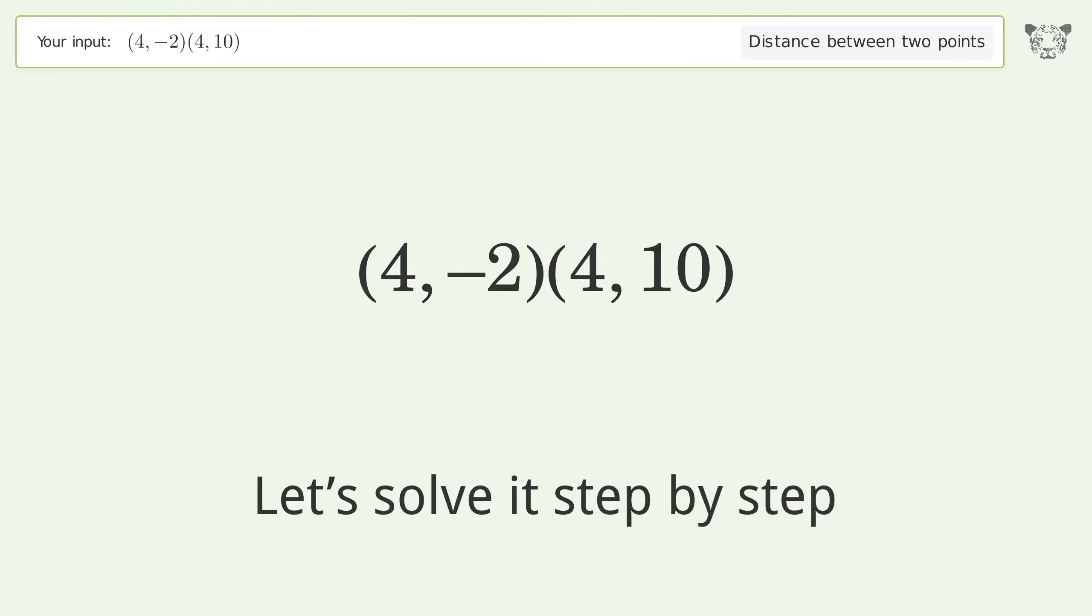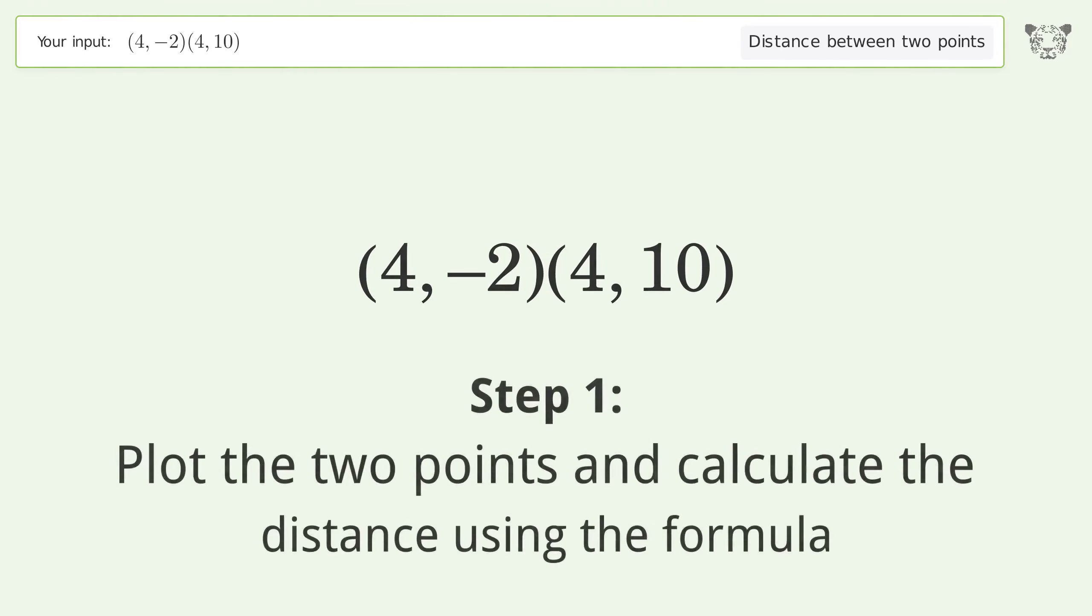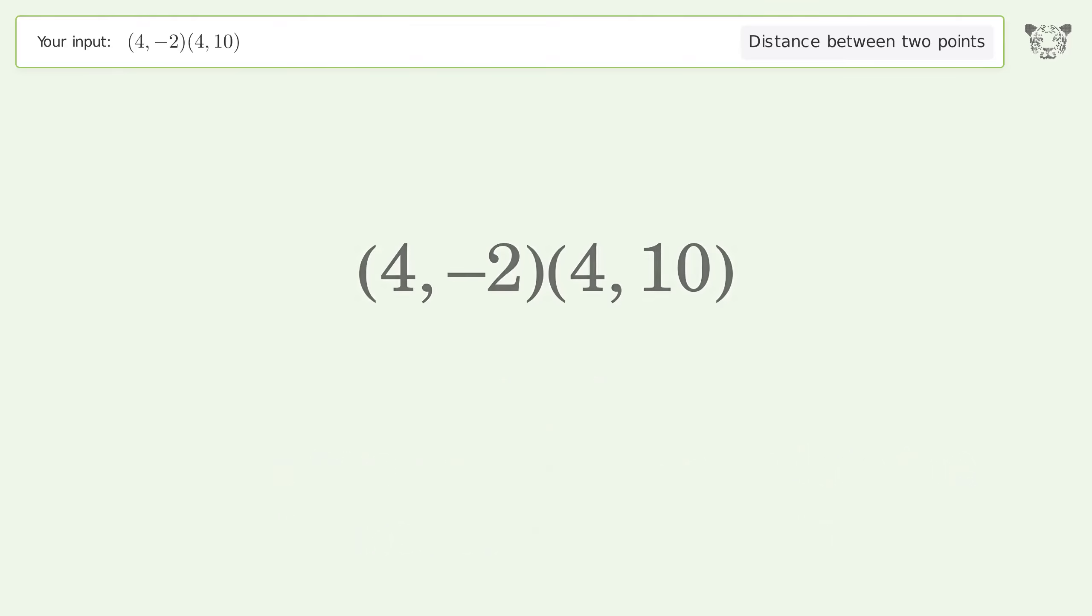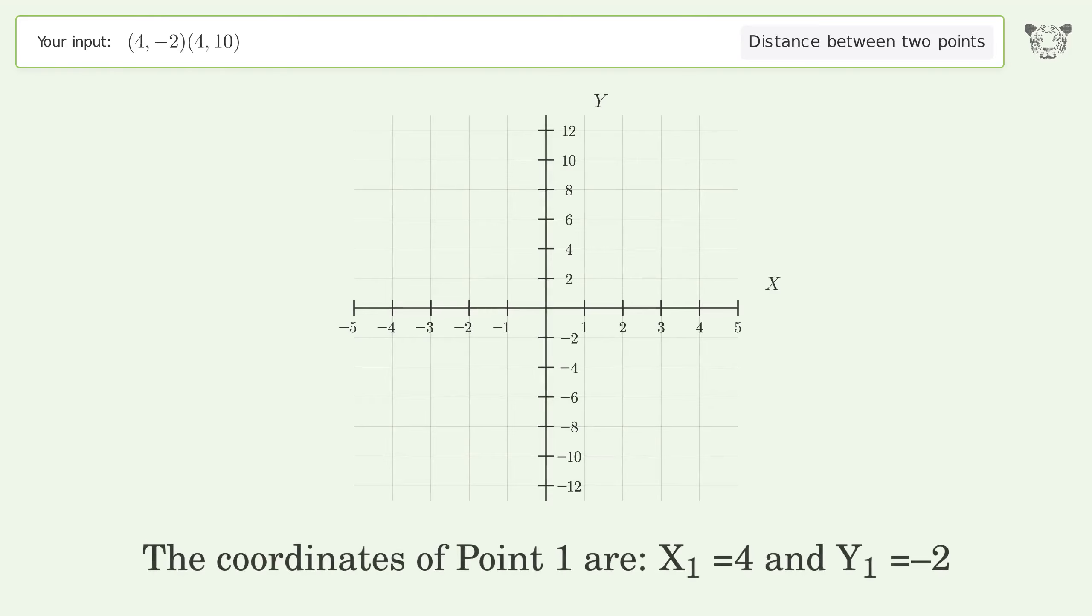Let's solve it step by step. Plot the two points and calculate the distance using the formula. The coordinates of point 1 are x1 equals 4 and y1 equals negative 2. The coordinates of point 2 are x2 equals 4 and y2 equals 10.